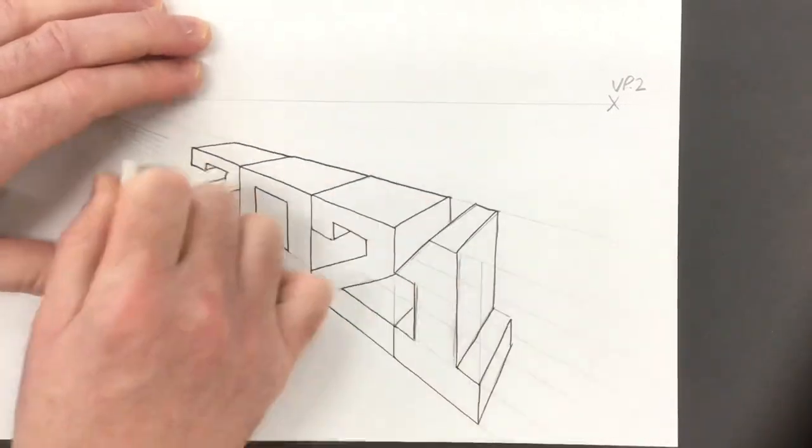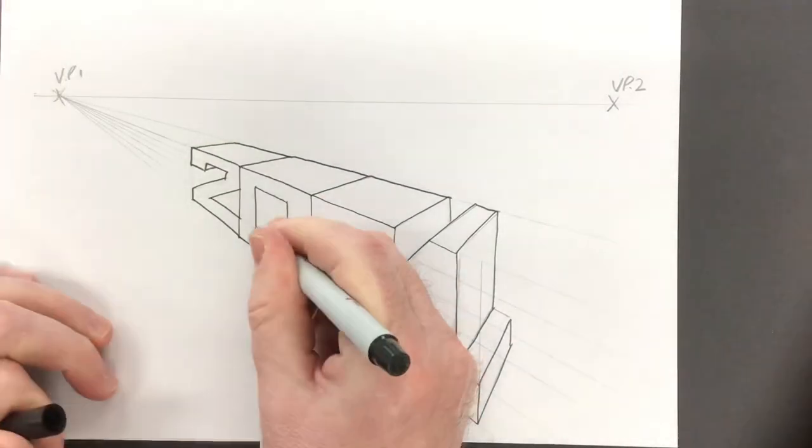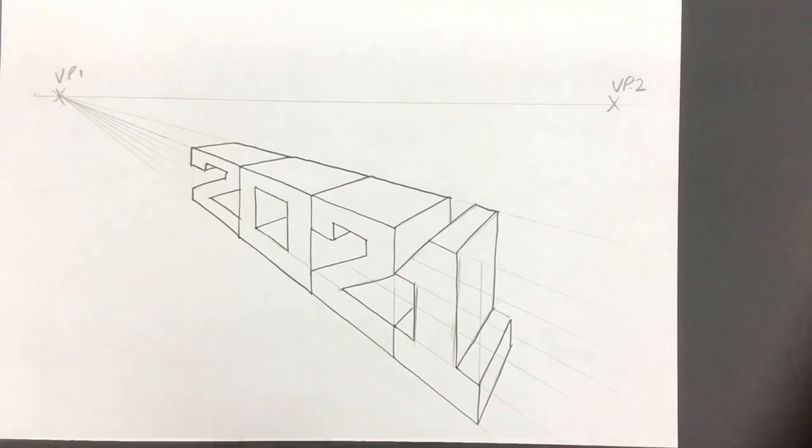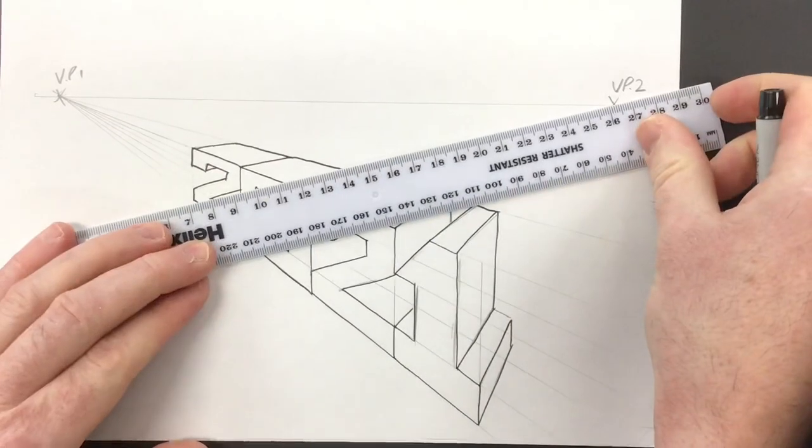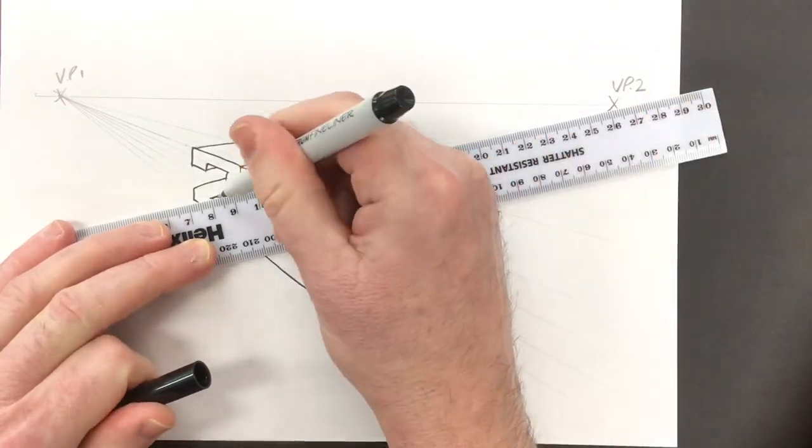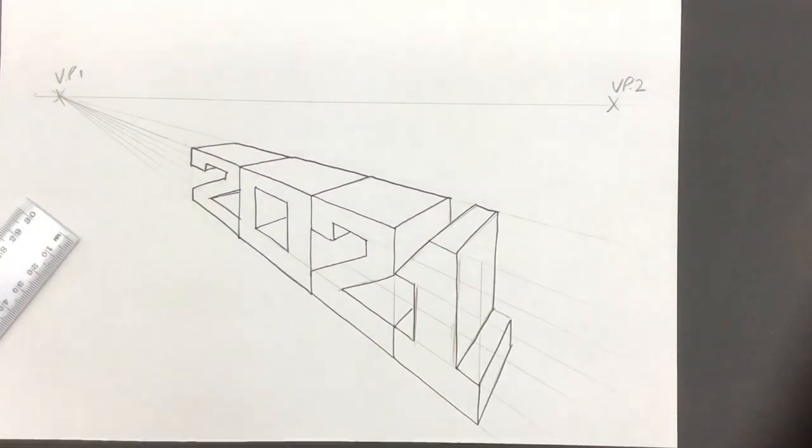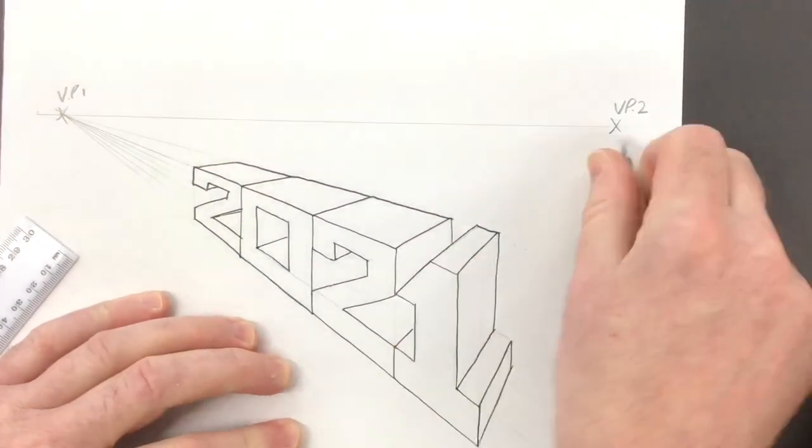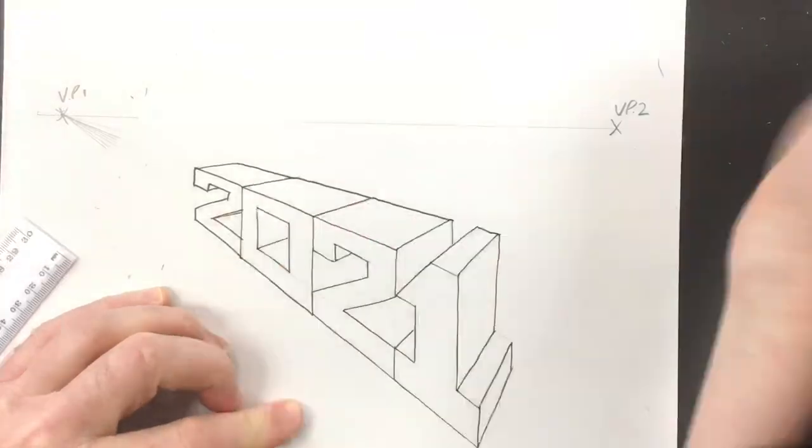Before you add the coloring pencil though, it's not a bad idea to just make sure you've done all the fine line in and also do one last check to make sure you've got all the lines up to VP2. Then get a rubber and get rid of all the pencil lines and guidelines.